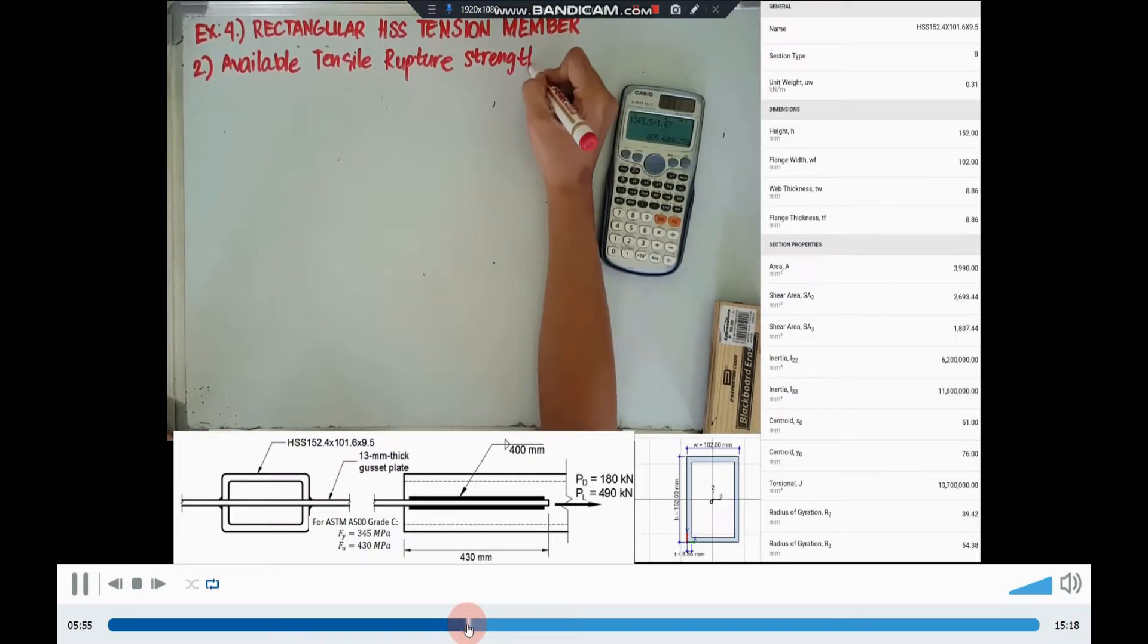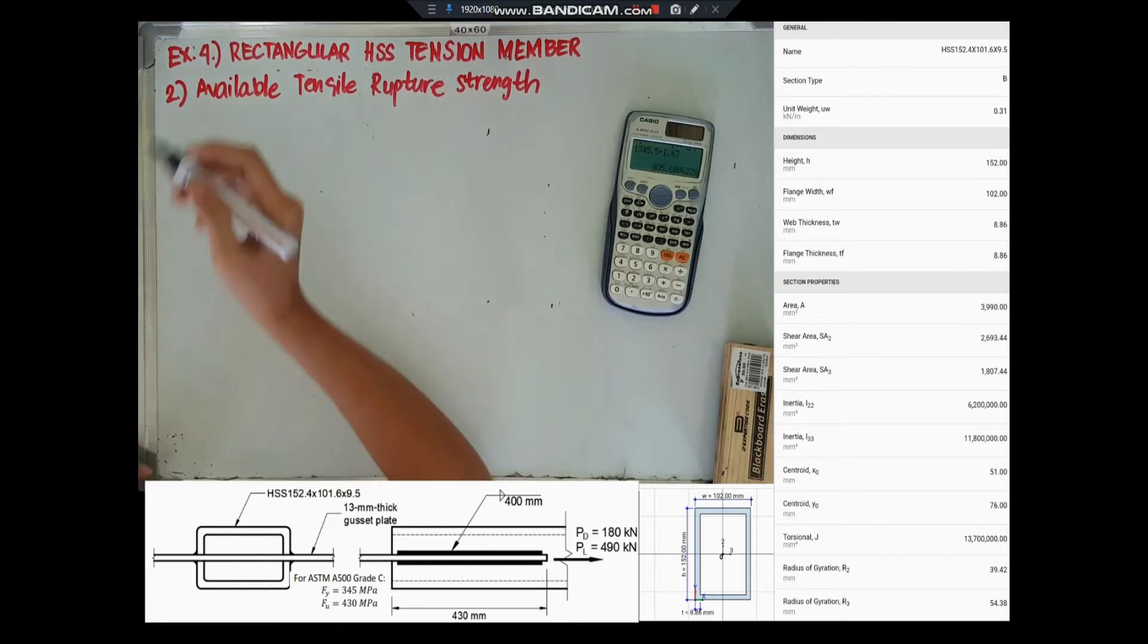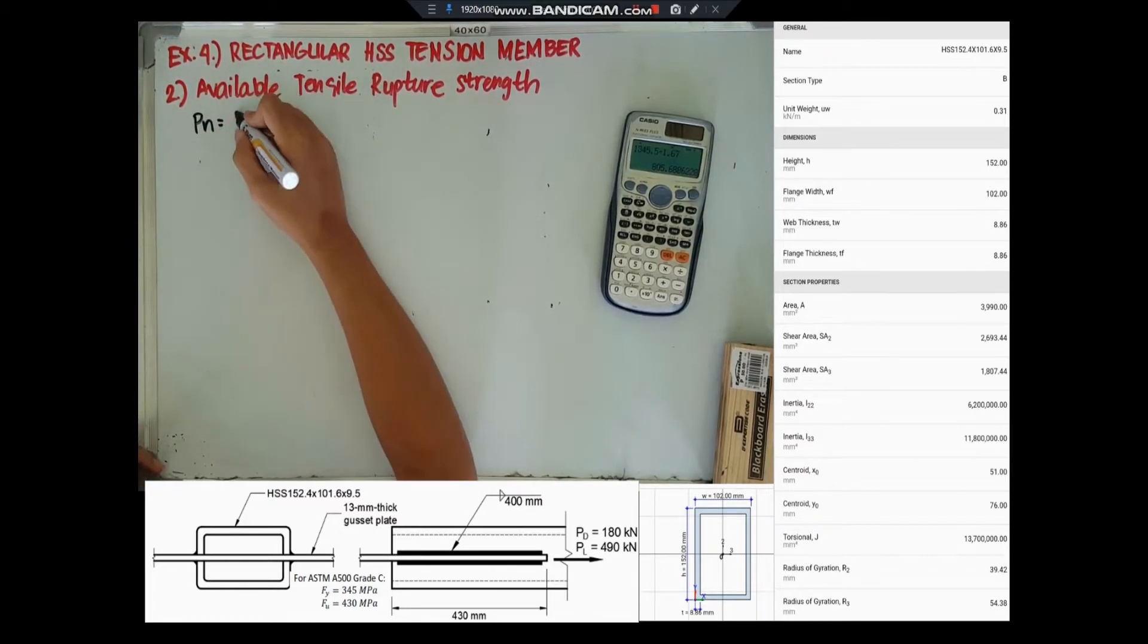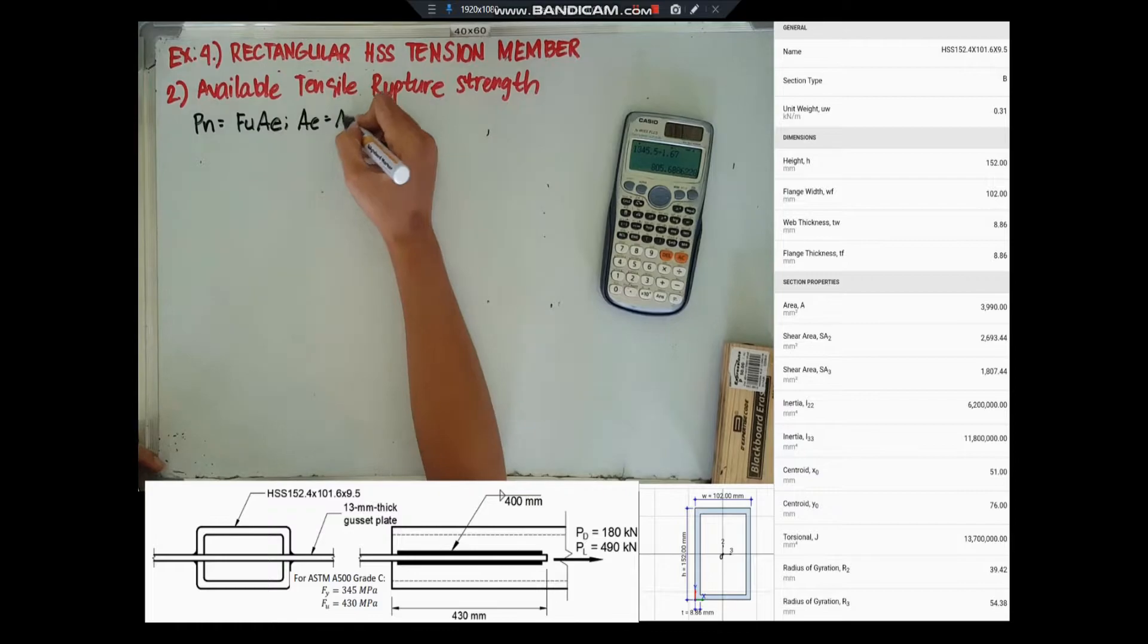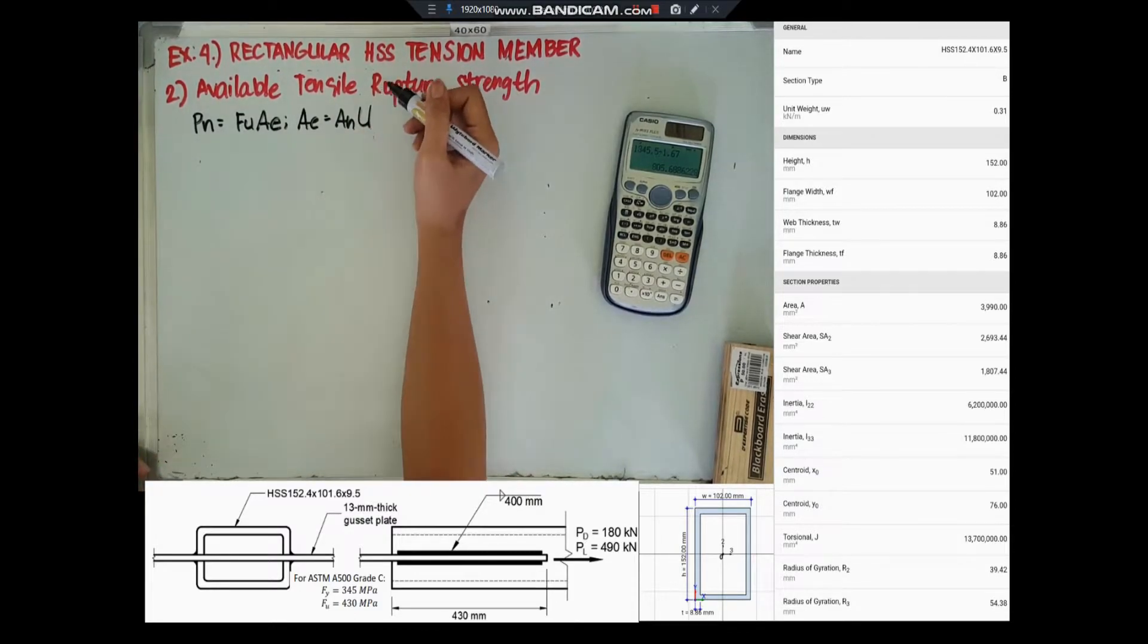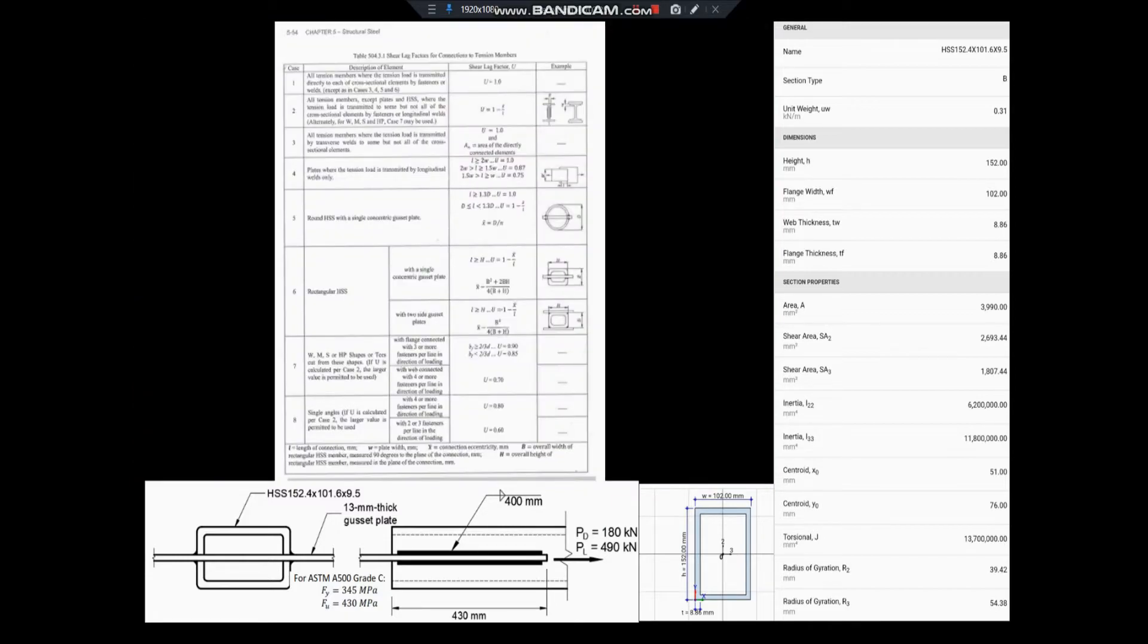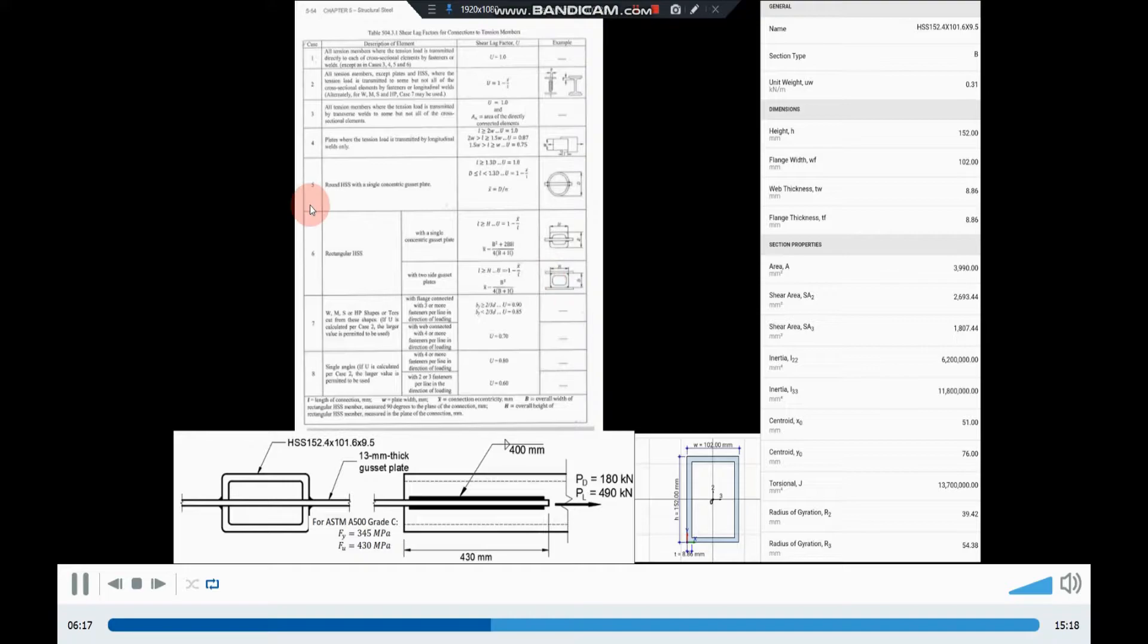For our available tensile rupture strength, PN is equal to tensile stress multiplied by the effective net area. We need to determine the shear lag factor U. Since this is a welded member, we'll use case number 6, rectangular hollow steel section with a single concentric gusset plate.